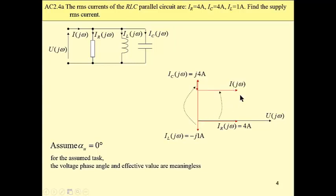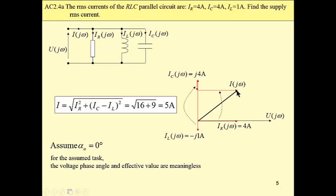And the total current is here. This current, this phasor, is the hypotenuse of a right-angled triangle. We know both legs of this triangle.